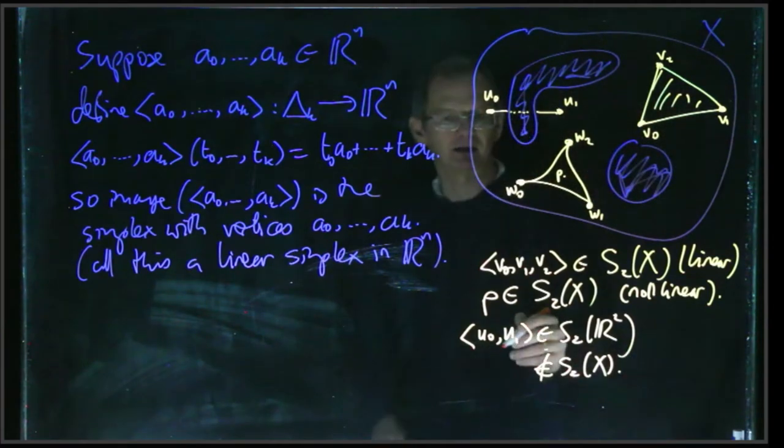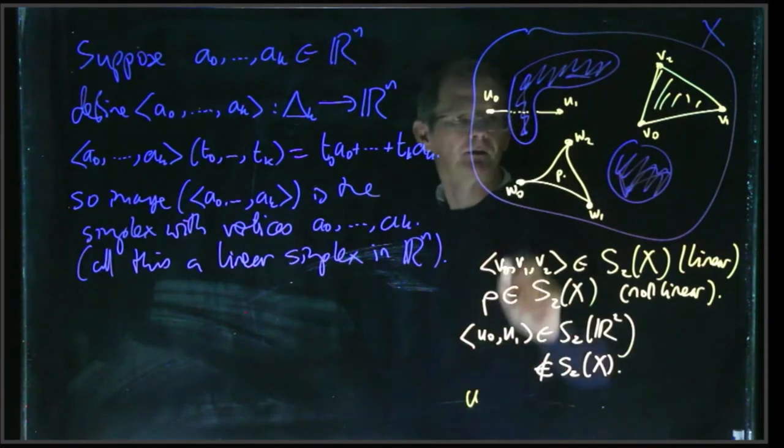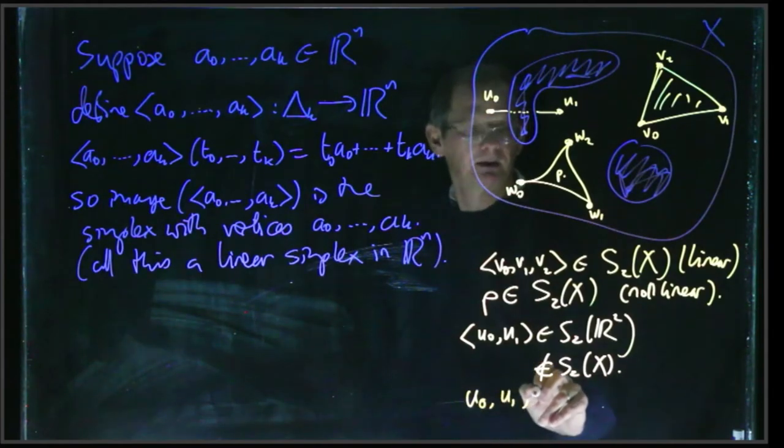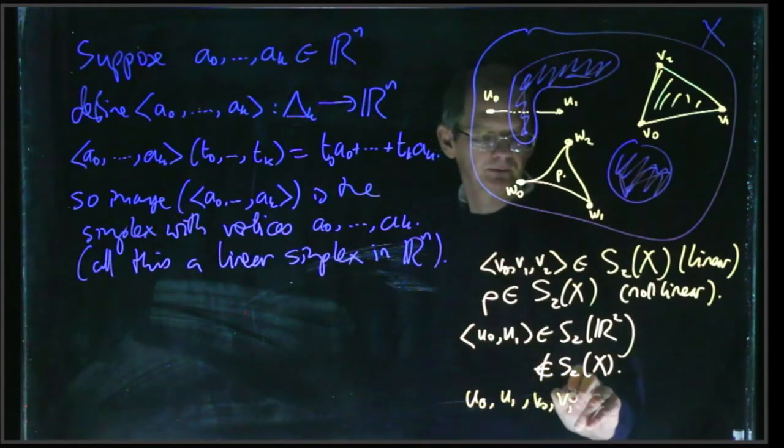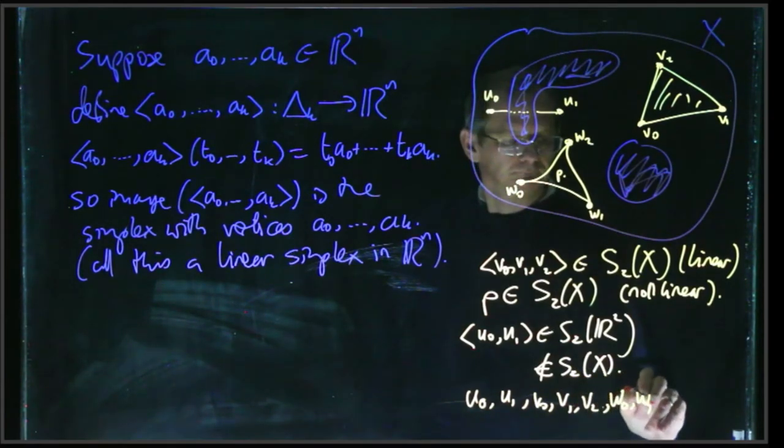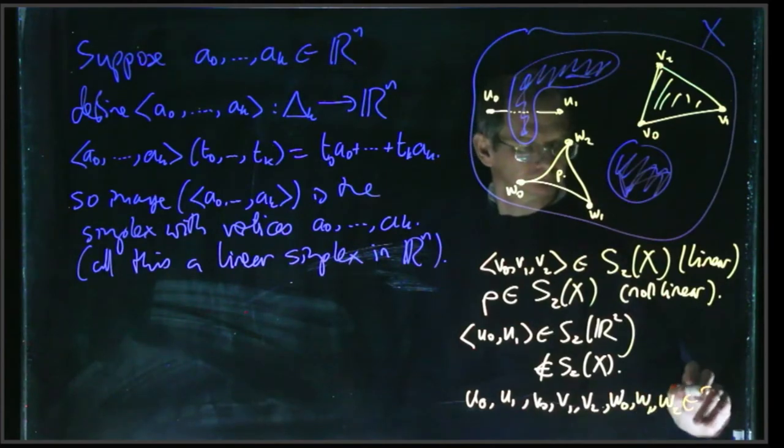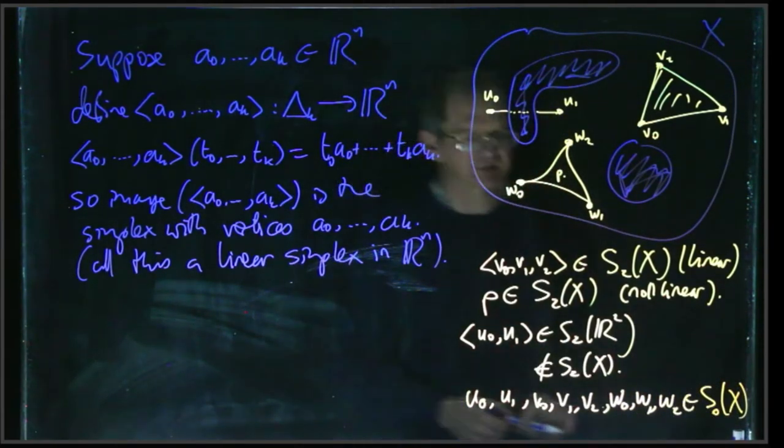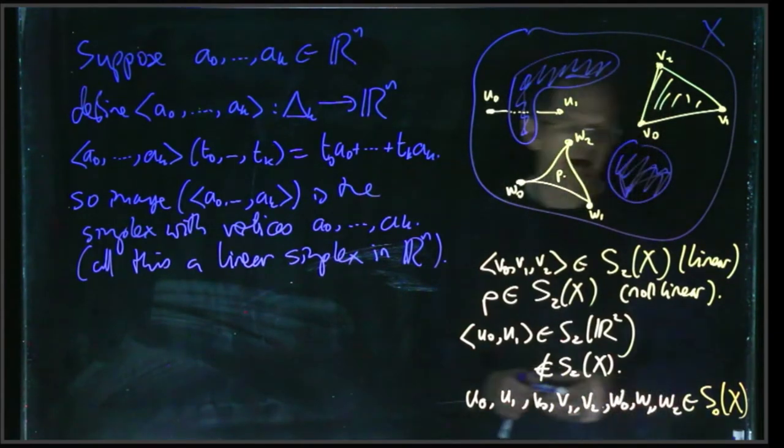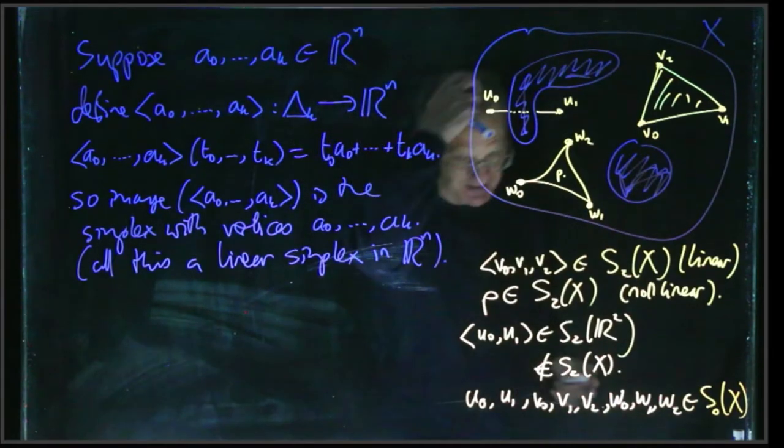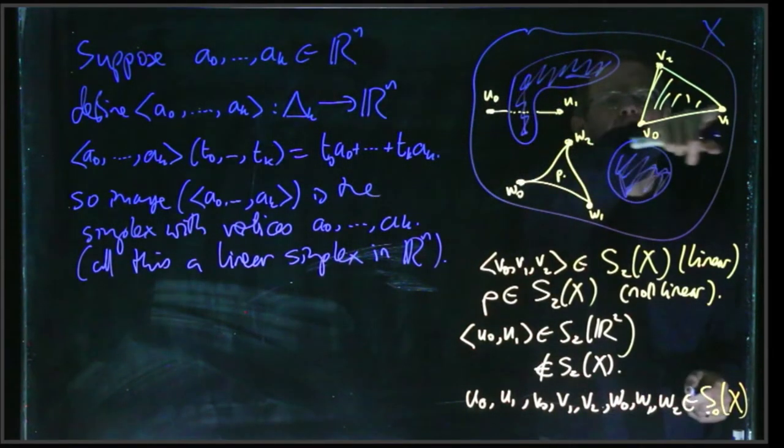And then the individual points u₀, u₁, v₀, v₁, v₂ - each of those, they're all points in X, and so they, in particular, count as elements of S₀(X), because S₀ is essentially just the same as X. And then we've got some linear one-simplex, say, from v₀ to v₁, and so on.